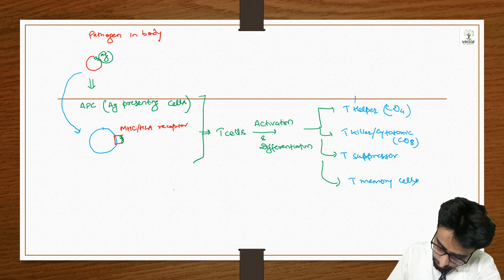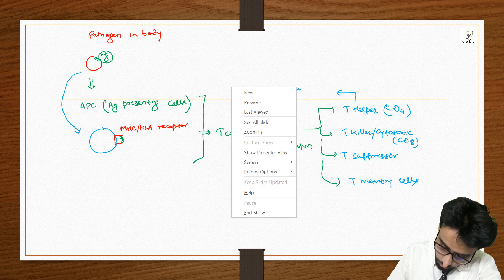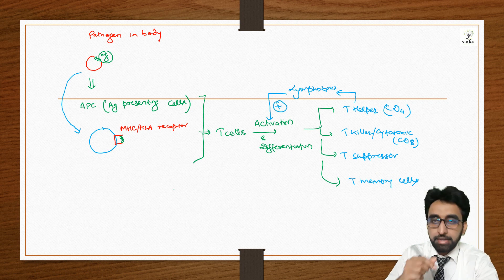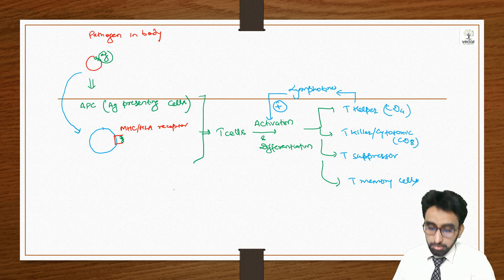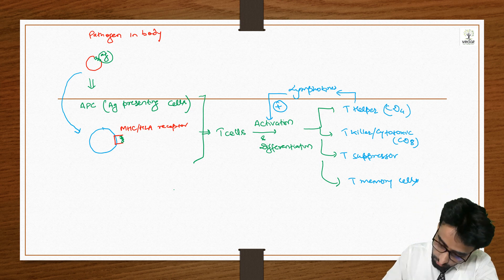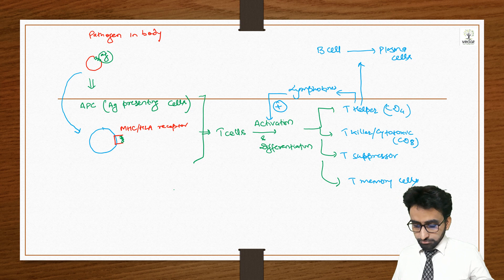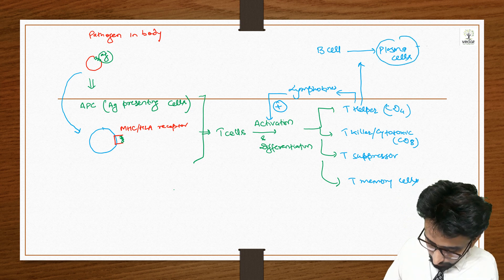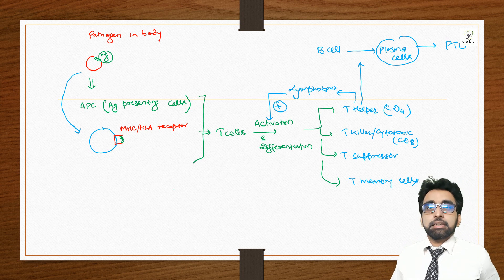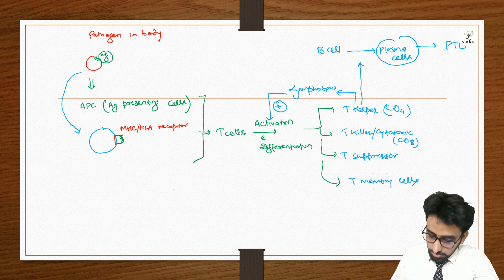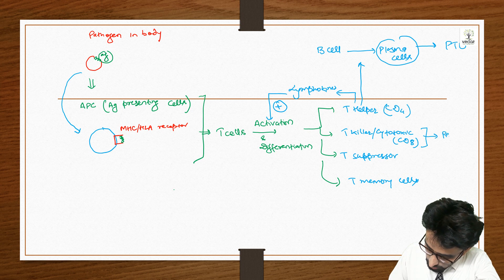The function of T-helper cells: they secrete some chemicals called lymphokines or interleukins, which lead to more activation and differentiation of T-cells. T-helper cells also go and differentiate B-cells, causing B-cells to change into plasma cells.